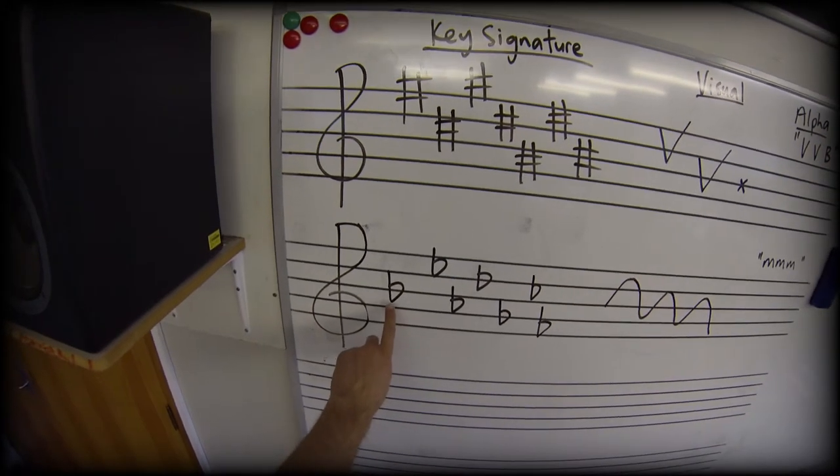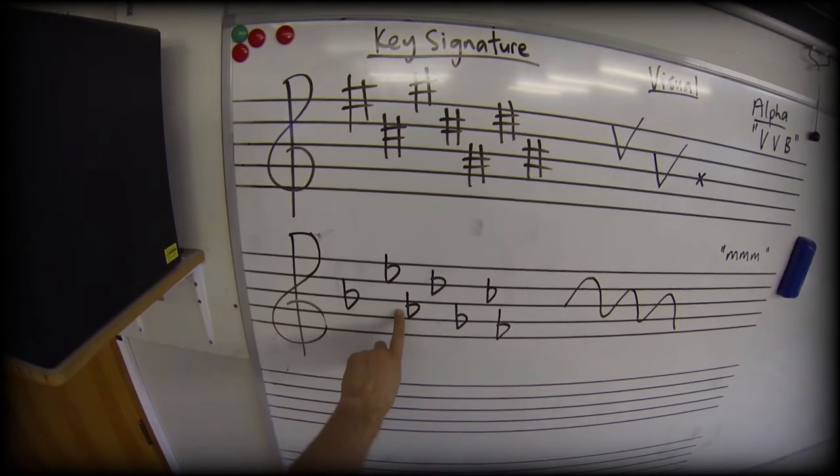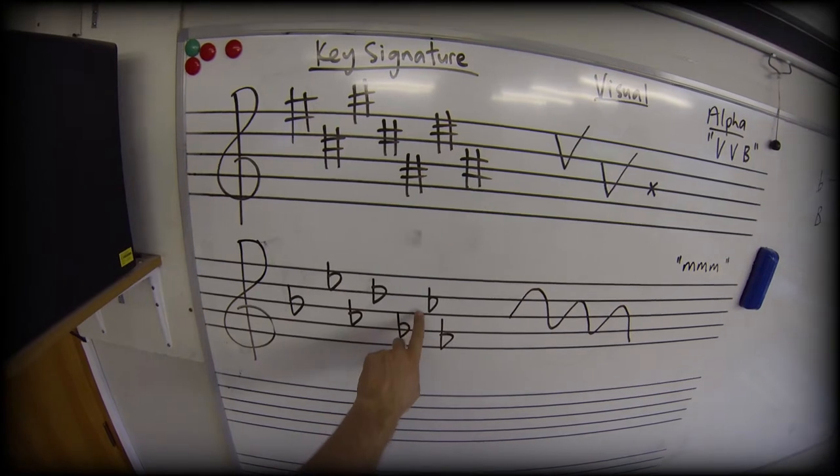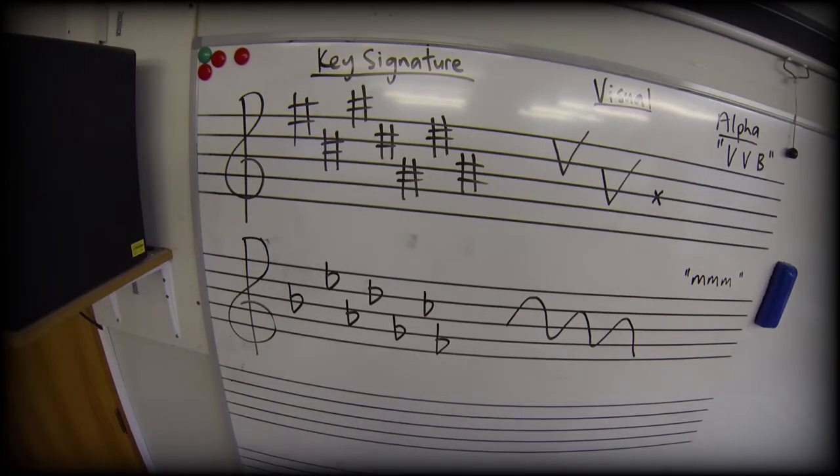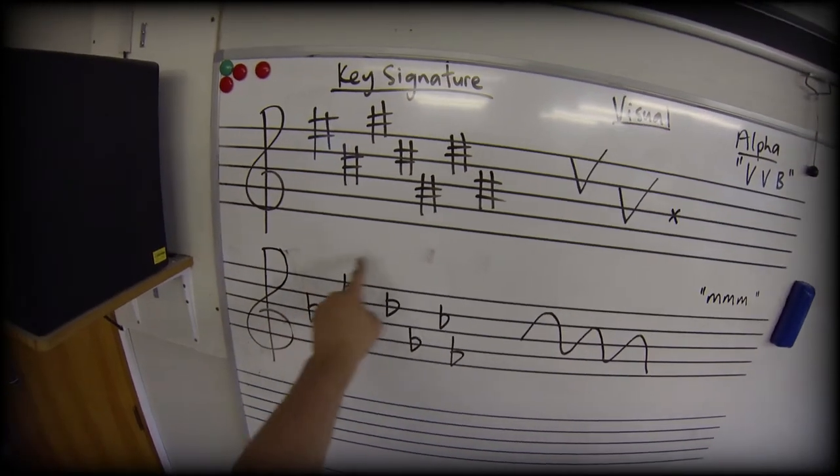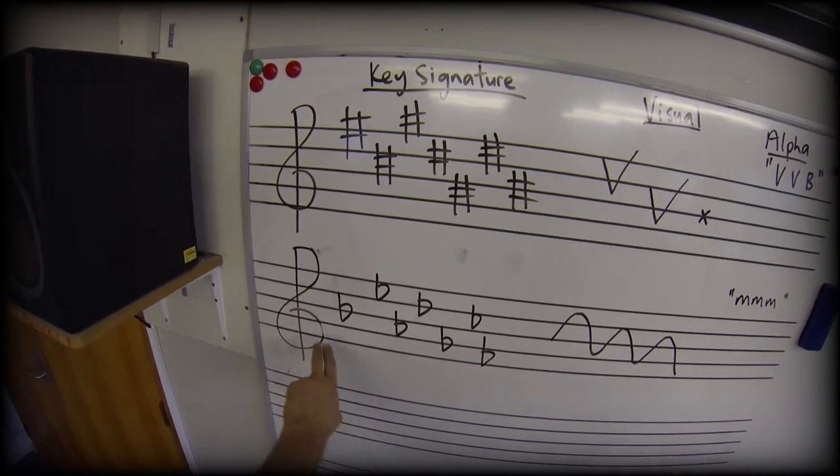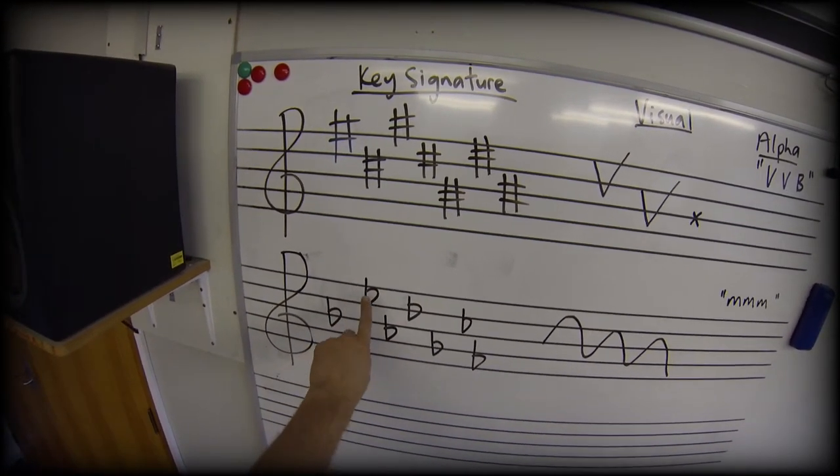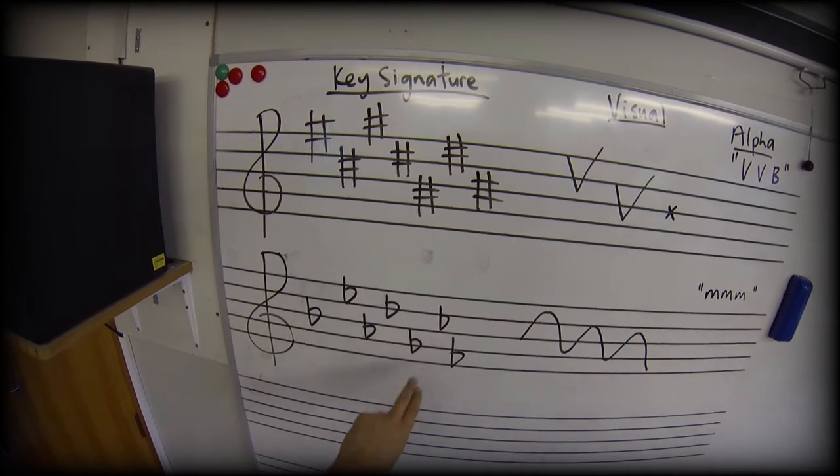We should see from left to right B, E, A, D, G, C, and F. So if we were in the key of C flat major we would use seven flats and we'd have to write the key signature with all seven flats in that order.